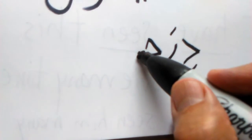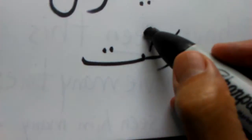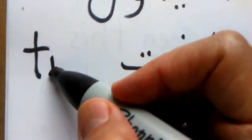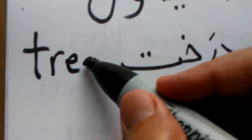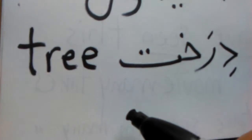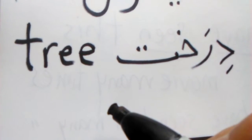And of course, we can't forget دریاچه, lake. درخت. Tree. درخت. Tree.